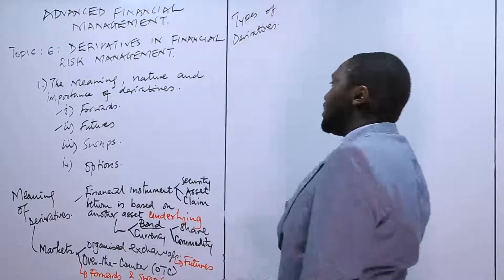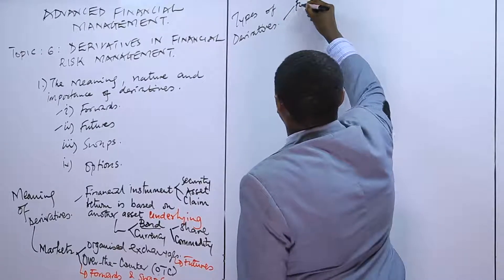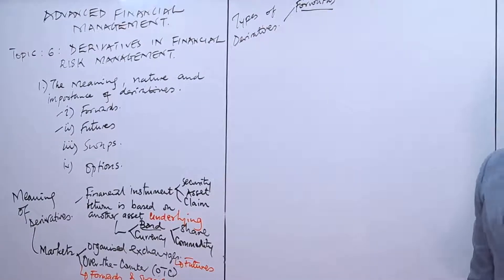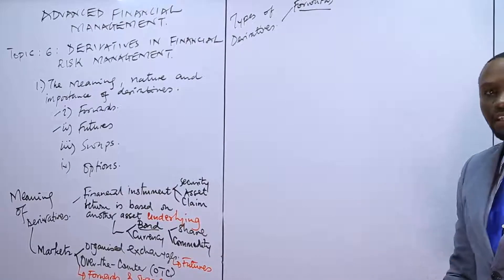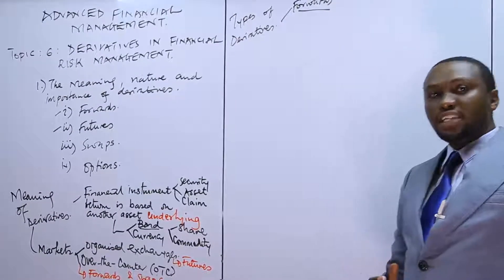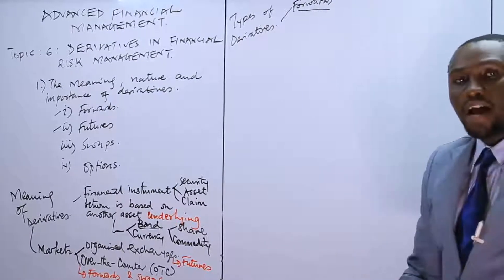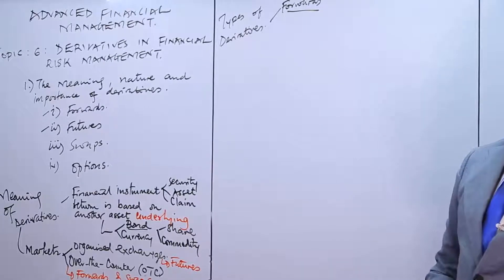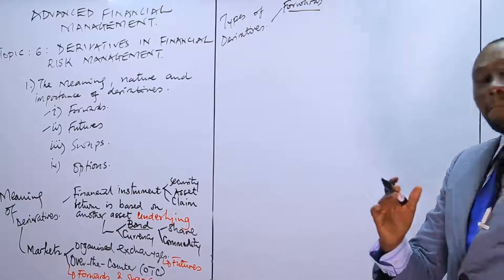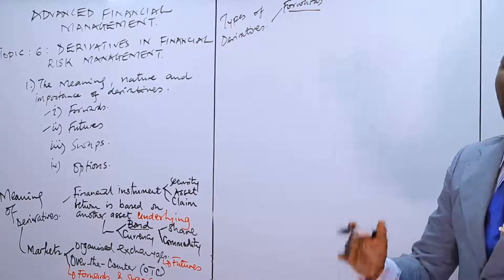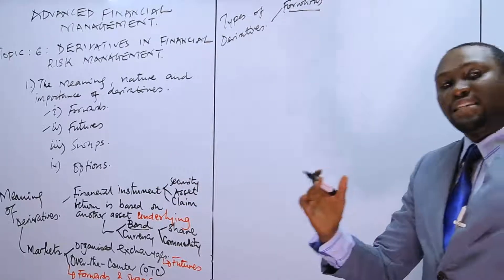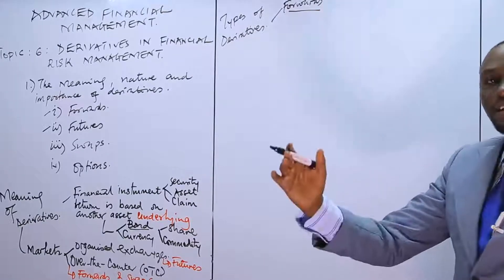The first type we look at are forwards. Forwards are generally agreements or future commitments whereby one party agrees to do something for another party. In perspective, it means there are two parties — one party agrees to buy a financial instrument at a future date at a price agreed with the other party, who is the seller. They agree on that future price today.